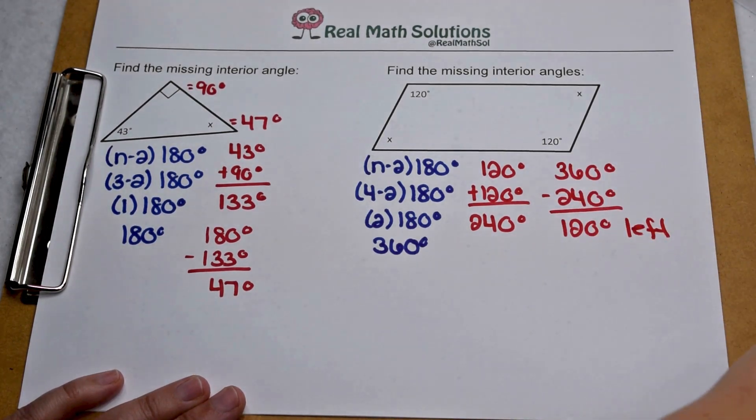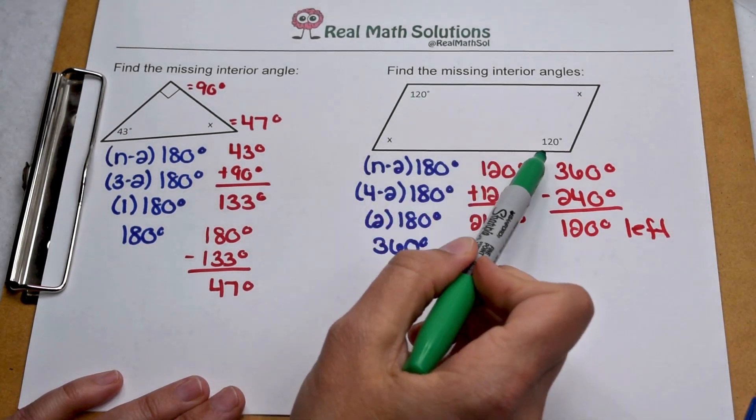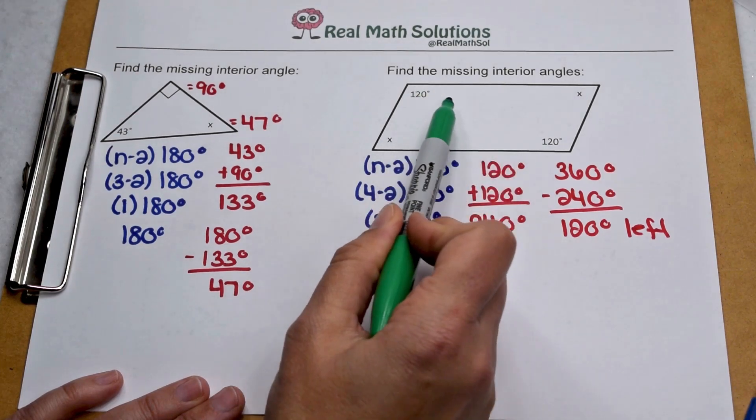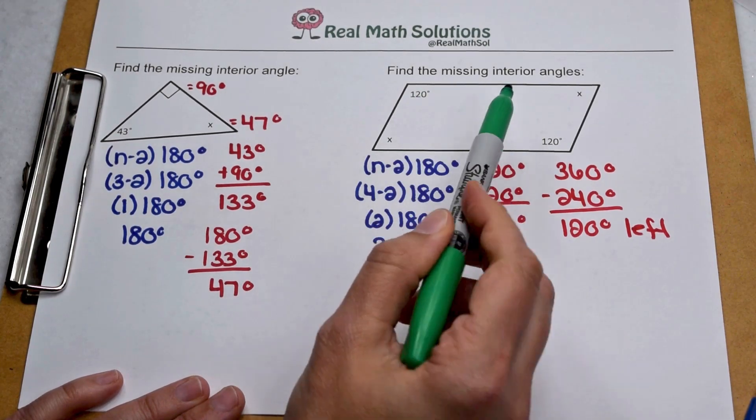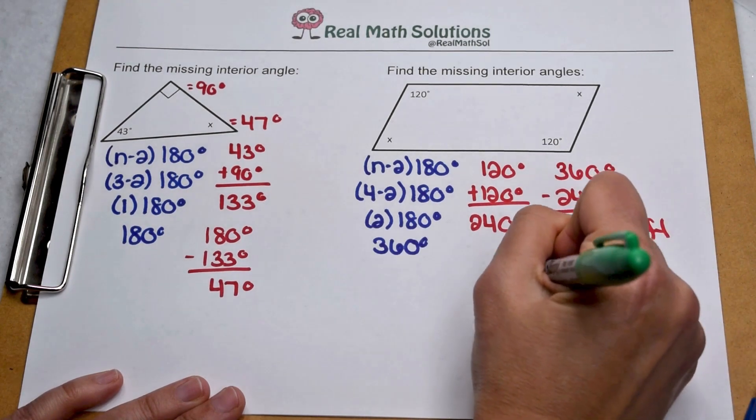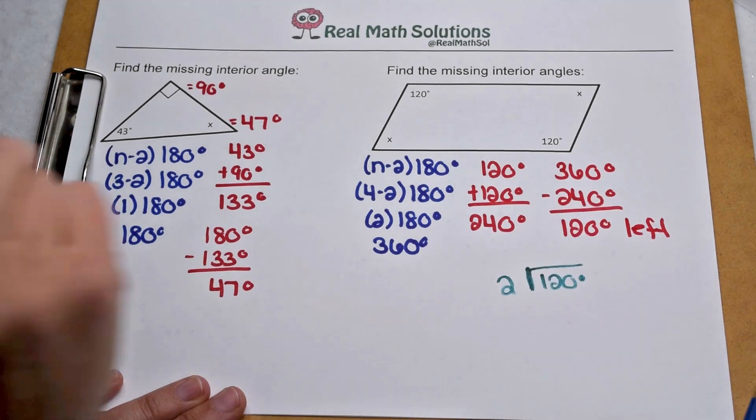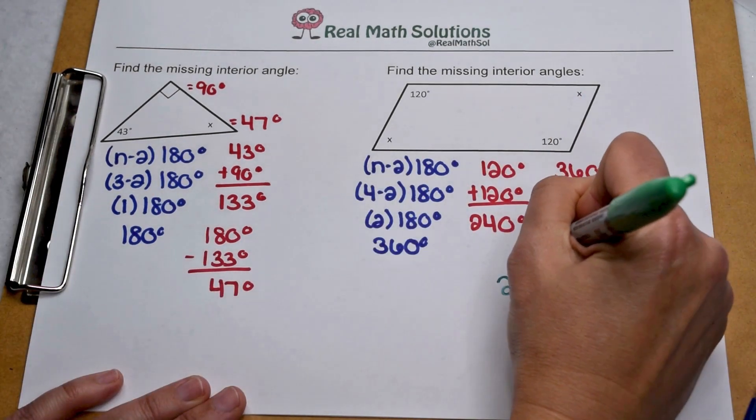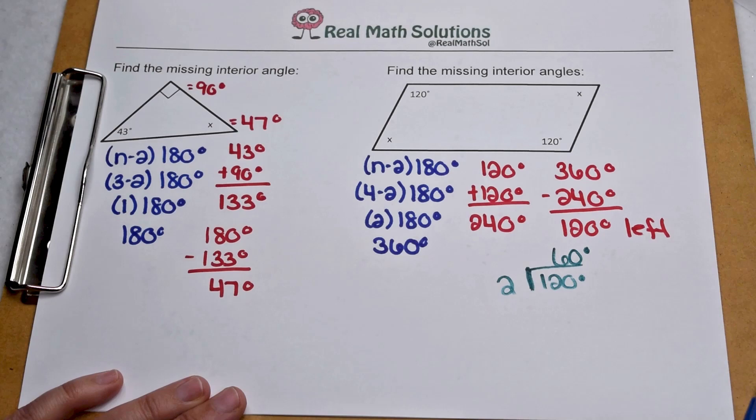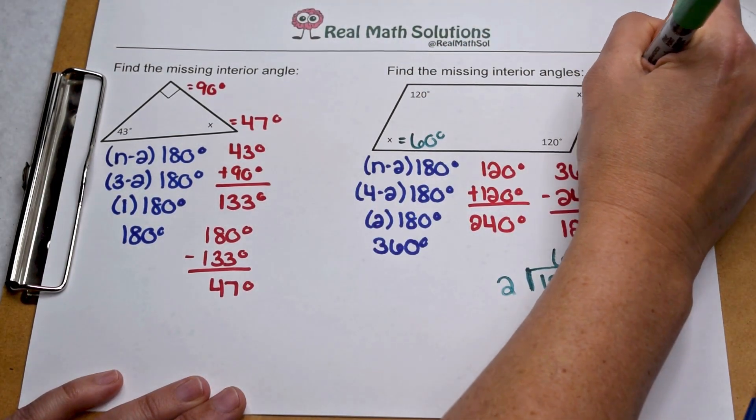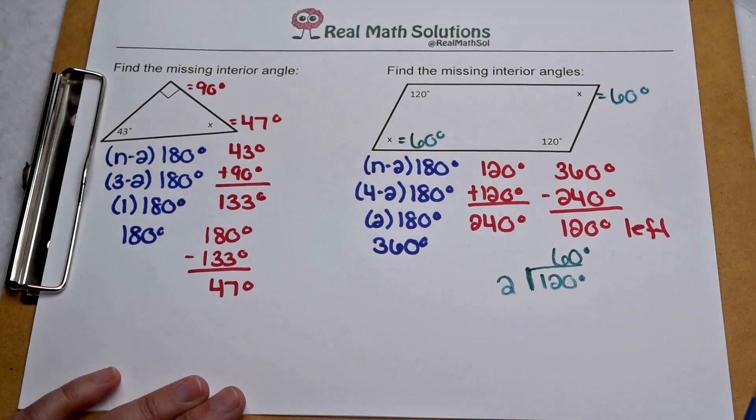But we have two missing angles this time. Since we're working with a parallelogram, we know that opposite angles are congruent. That means these two have the same value, and these two have the same value. So that 120 degrees that we have left, we can divide it equally amongst the two angles. 120 degrees divided by 2 is 60 degrees. So each missing angle on our parallelogram is worth 60 degrees.